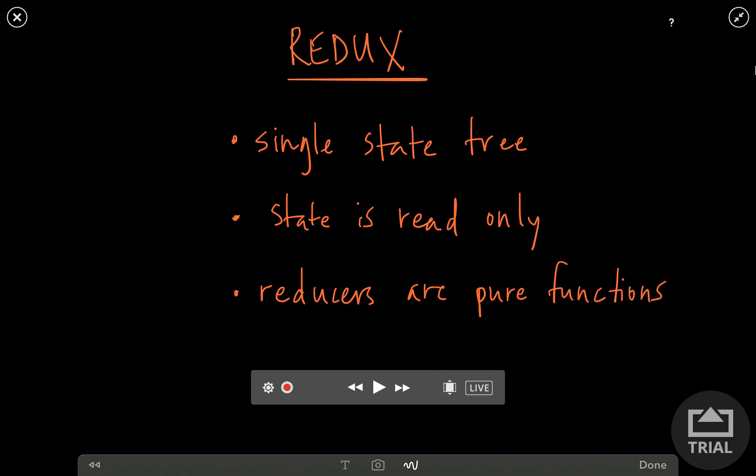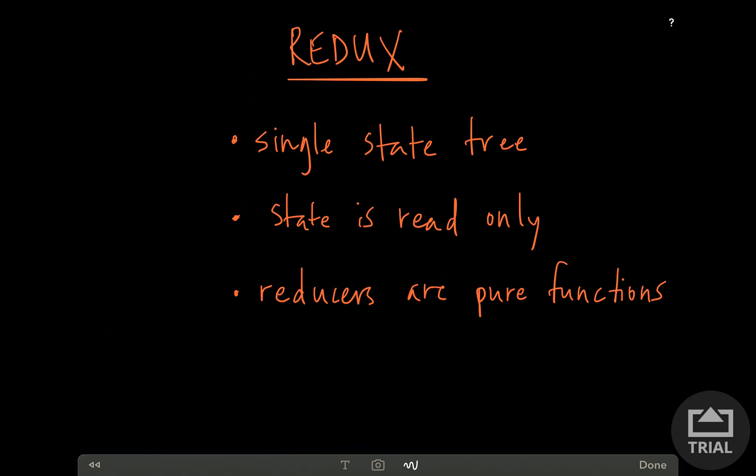There are three main concepts of Redux. The first is that there's a single state tree. All of the state of your entire application resides in one state tree, or really one big object. This means there's a single source of truth. Although it might seem clunky at first to put all your state into one object, it really does help simplify the mental model around your state and keeps that single source of truth. We'll see how we can break it down and still modularize it to make it easier to think about specific aspects of the state.